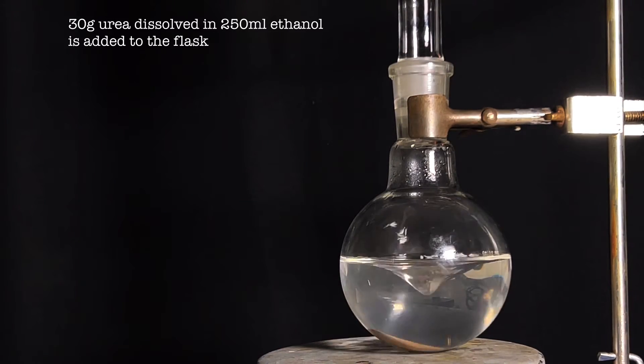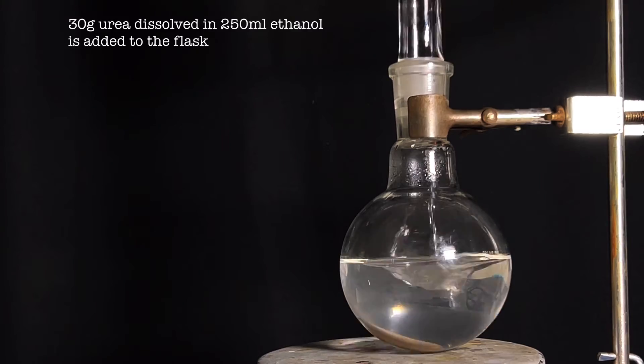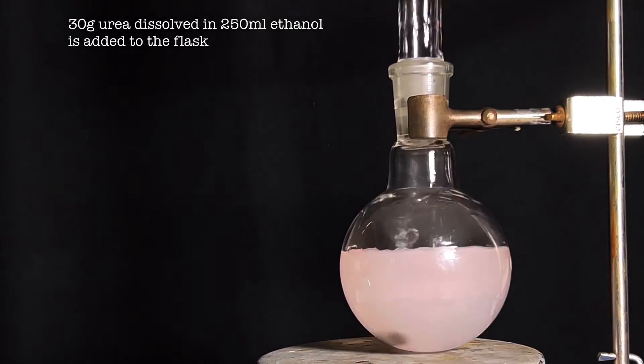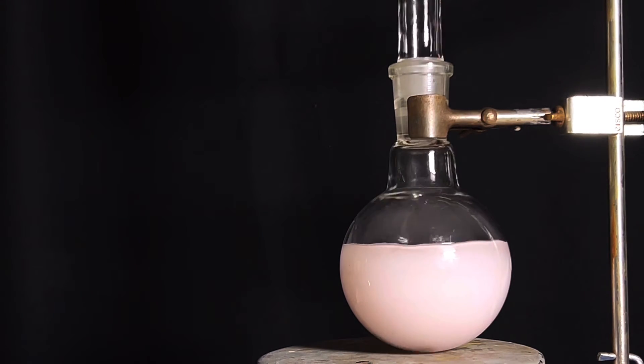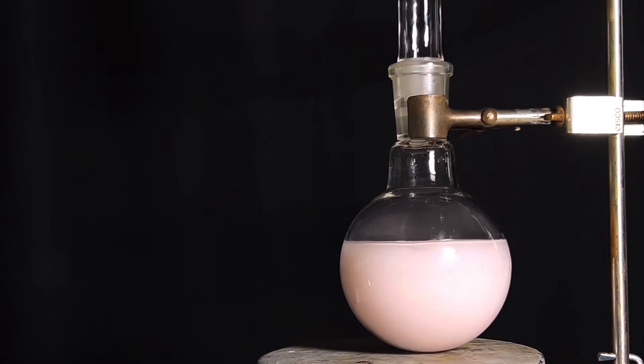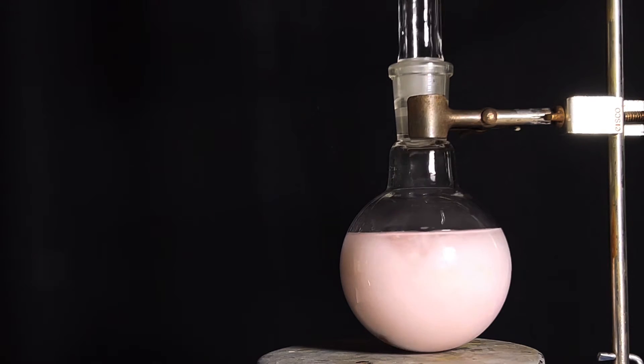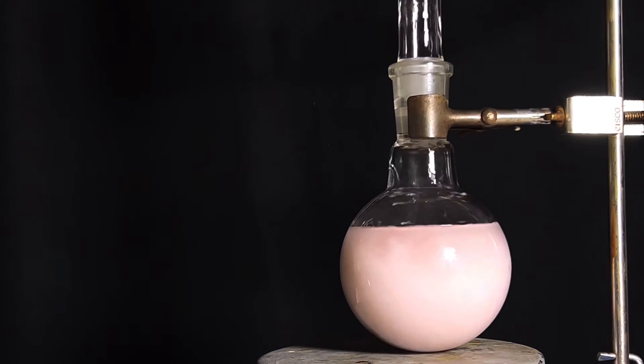Now a solution of 30 grams of dry urea in 250 ml of hot absolute ethanol was added through the top of the condenser. Note that the urea should be perfectly dry. I dried my urea in a vacuum desiccator alongside anhydrous calcium chloride for one week. A thick white precipitate formed. I thought this was barbituric acid, so I tested it, but it wasn't. The literature also mentions the thick white precipitate, so I left it as is and moved on.